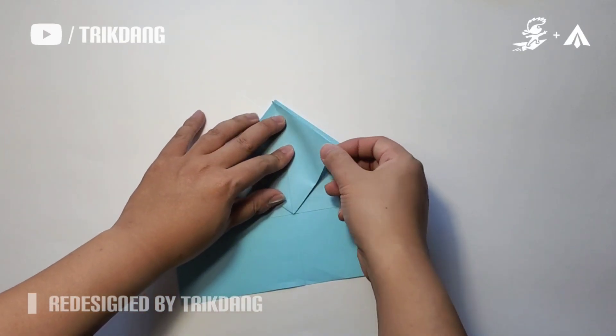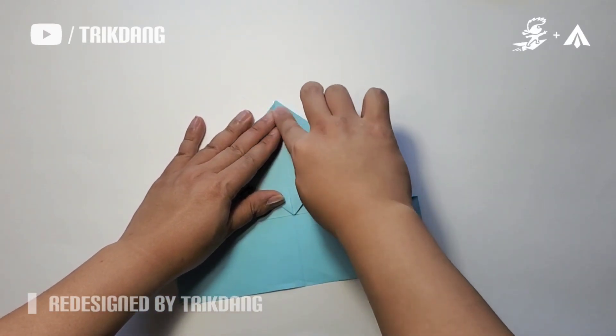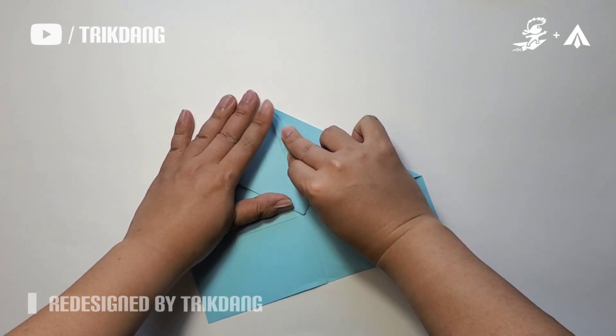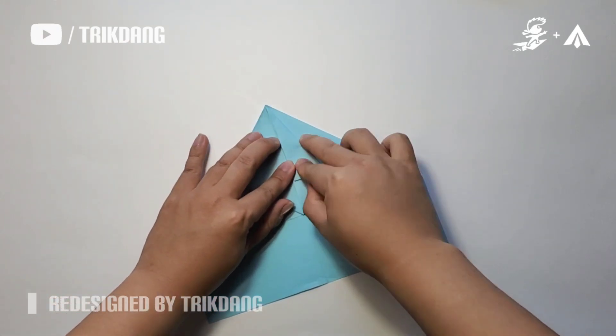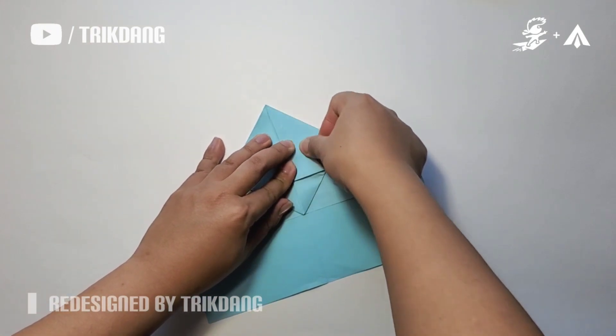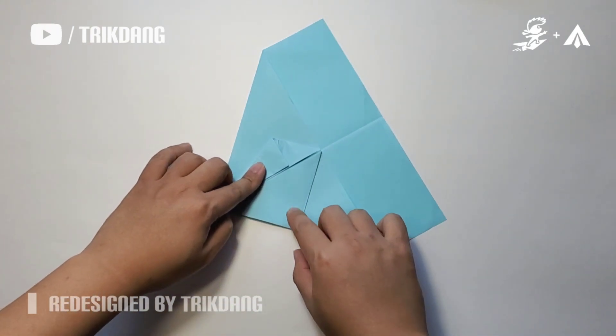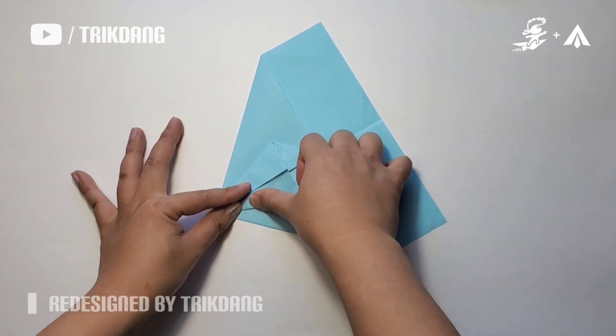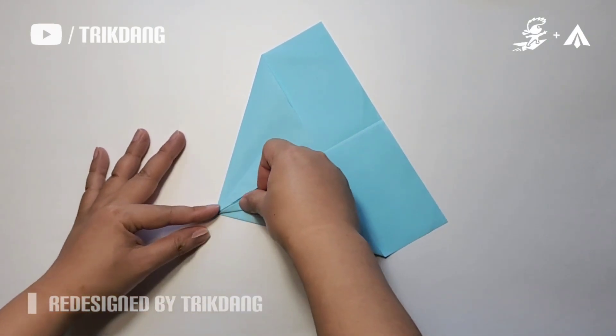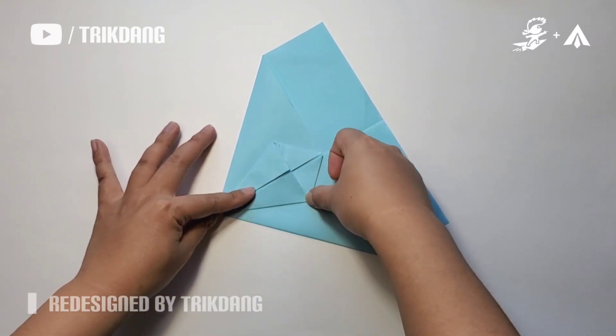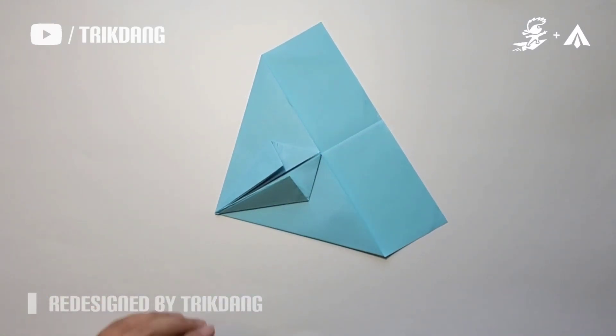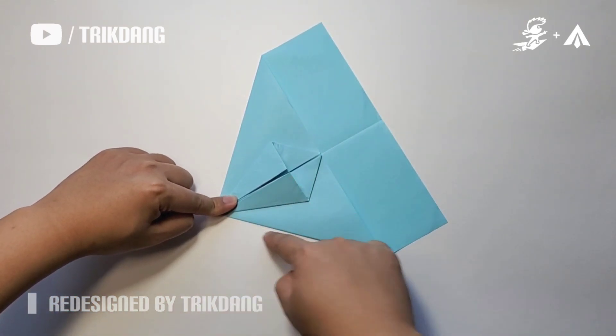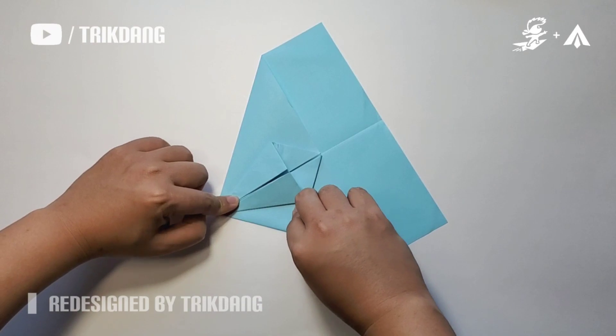On the following step, I will start from this edge, fold it to the center. I will start from this part of the paper, fold straight to the center. Press down the paper hard. Repeat the same fold for the opposite side. On the following step, I will start from this edge, fold it to the center, the other edge. I will start from this edge also to this edge, to this edge of the layer.